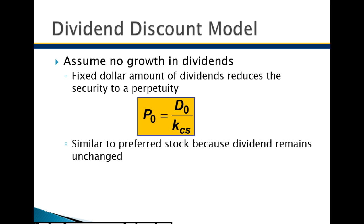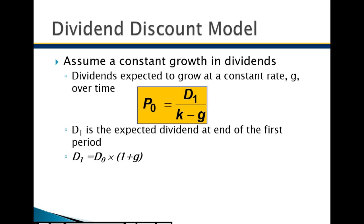The constant growth model incorporates G — the constant growth rate in the dividend. We take K (the discount rate or required rate of return) and subtract G, which makes K smaller and inevitably makes the stock price bigger. For example: dividend is $1, K is 10%, so $1 divided by 10% is $10. With a growth rate G of 5%, K minus G equals 5%, and now $1 divided by 5% gives a stock value of $20. The smaller K is, the more valuable the stock price.